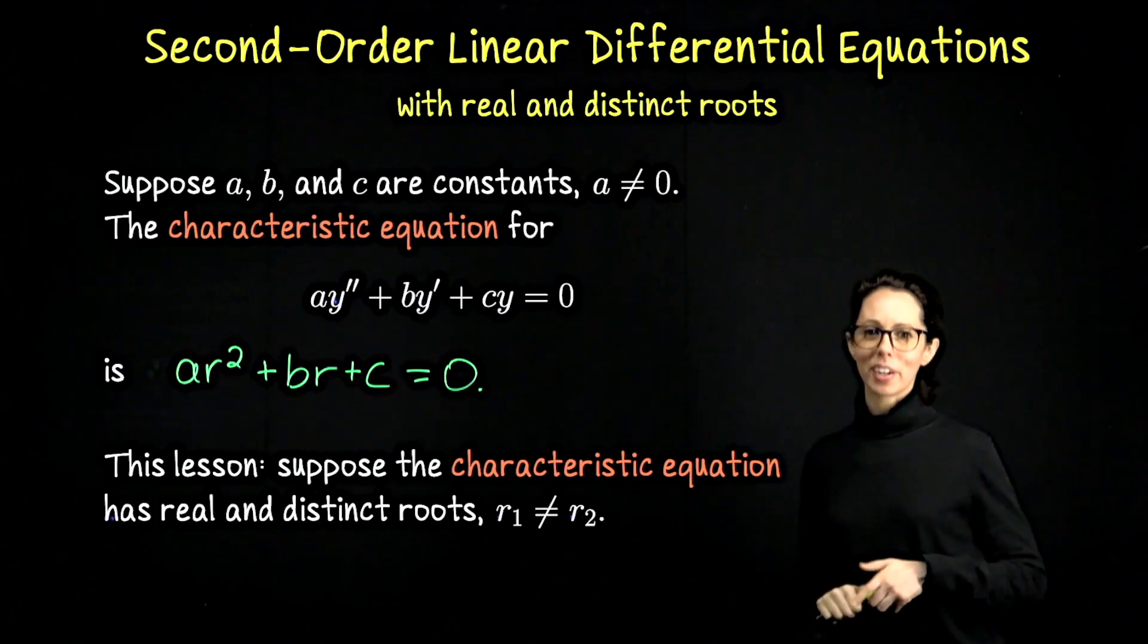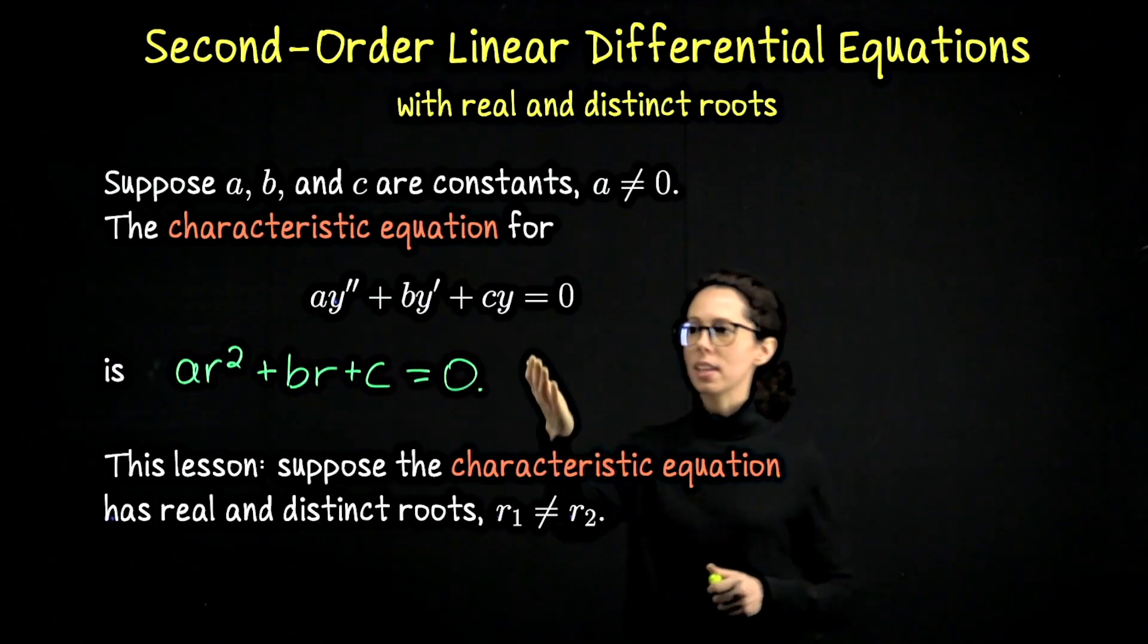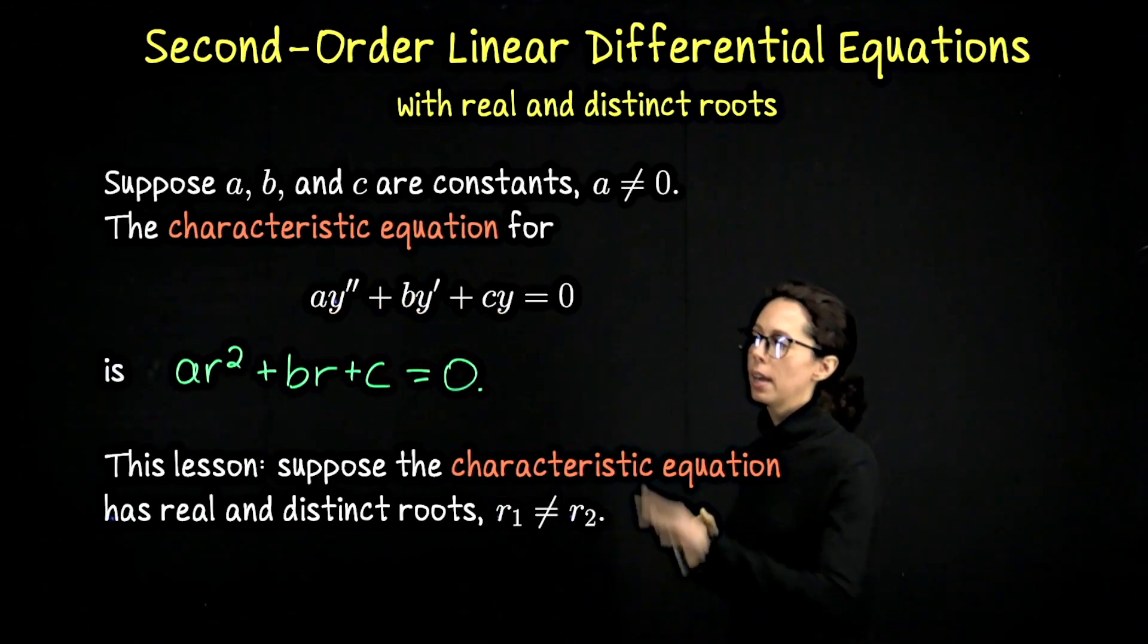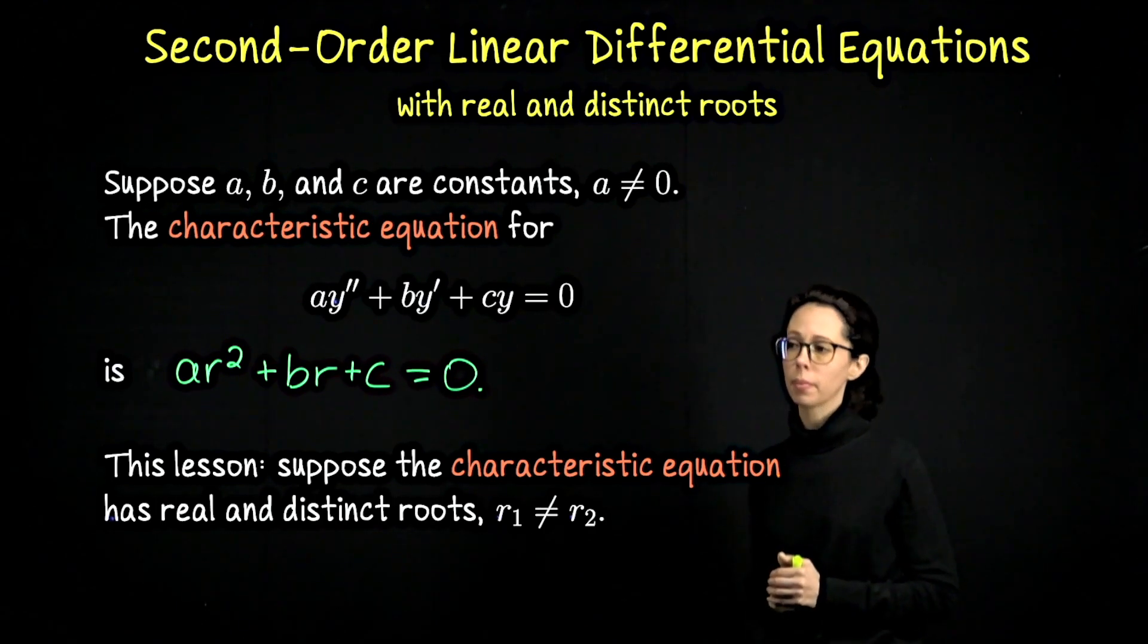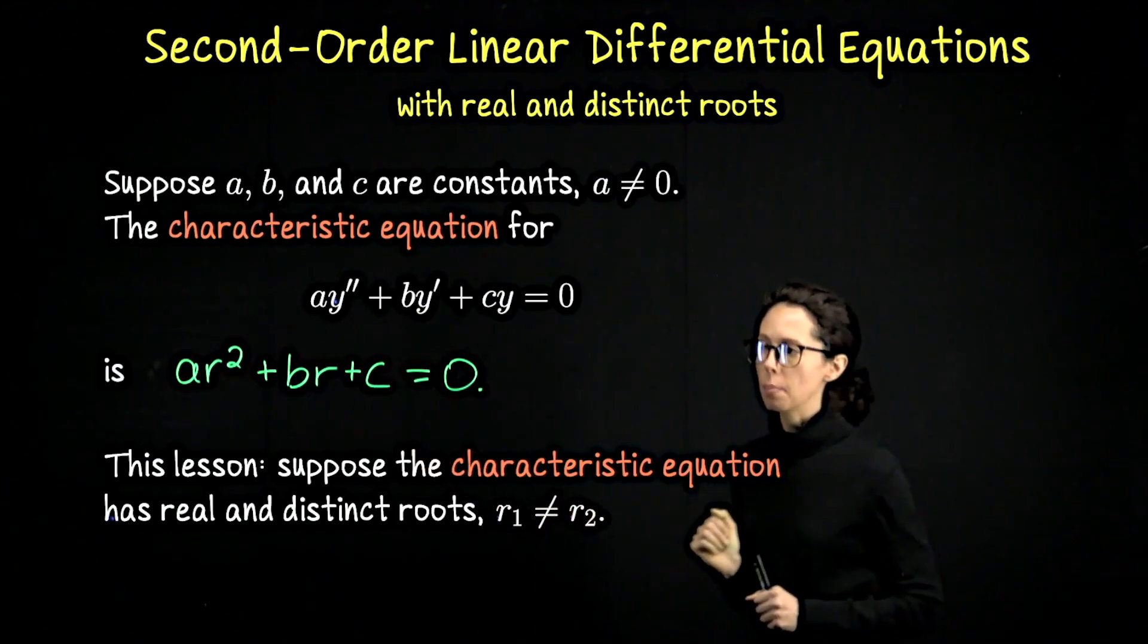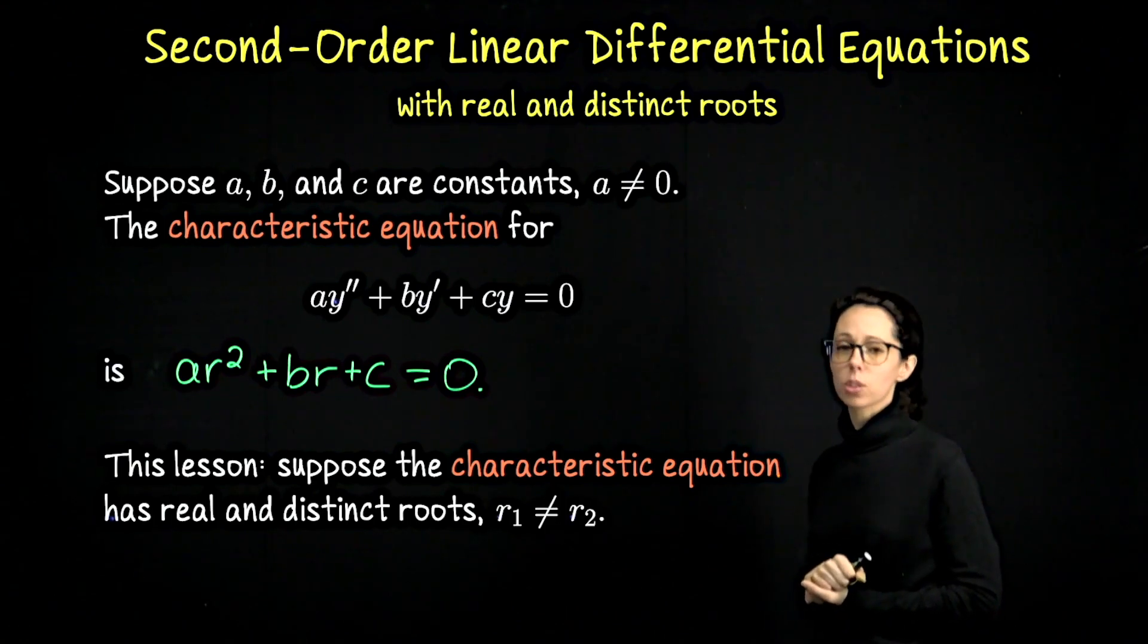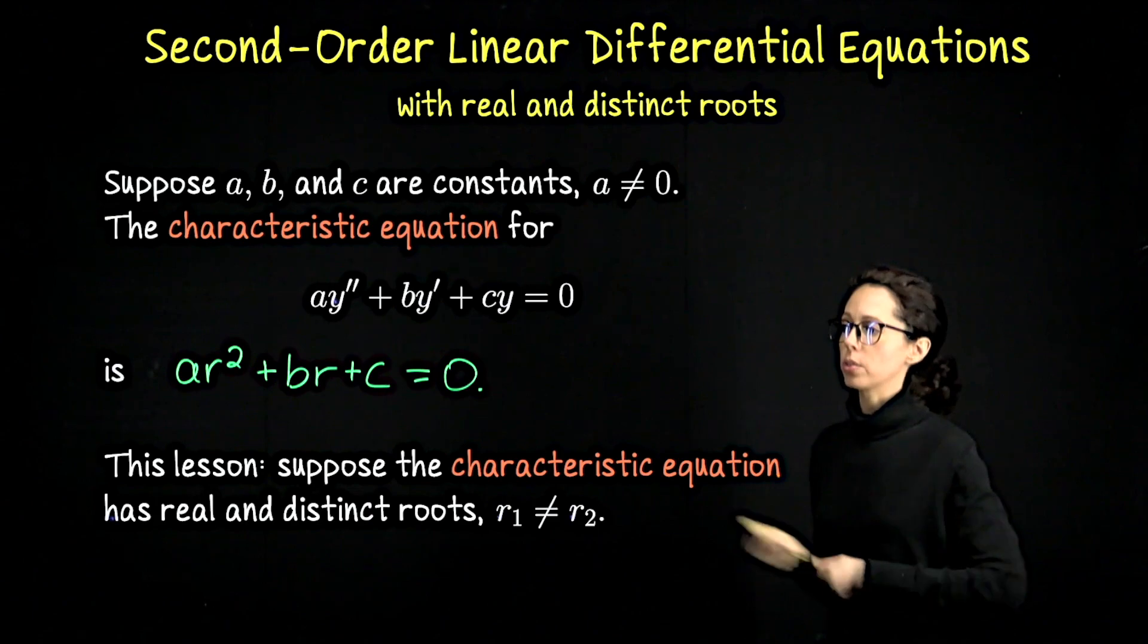It looks very similar to the starting differential equation. The main difference is that this is a differential equation for a function y together with its first and second derivatives. This is a quadratic expression in some number r. So r here is just a number, it could actually be real or complex, and we're looking for the solutions to this quadratic expression. So what are those? They're the roots.